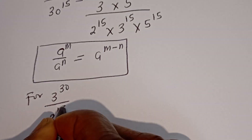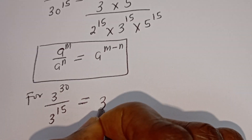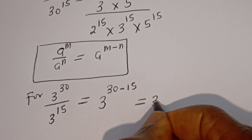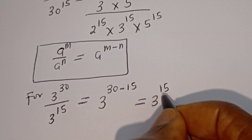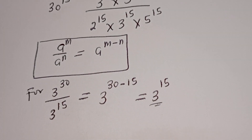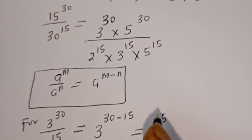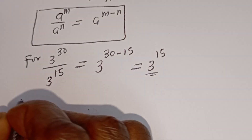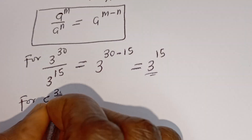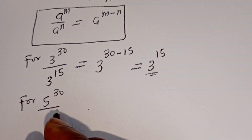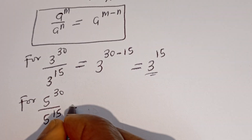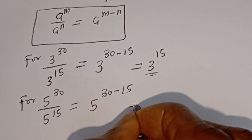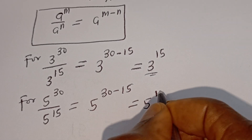For 3 to the power of 30 divided by 3 to the power of 15, this is equal to 3 to the power of 30 minus 15, which is equal to 3 to the power of 15. Also, for 5 to the power of 30 divided by 5 to the power of 15, this is equal to 5 to the power of 30 minus 15, which is equal to 5 to the power of 15.